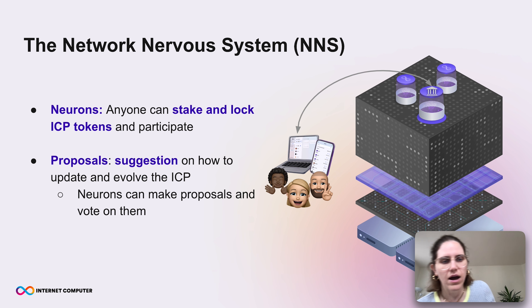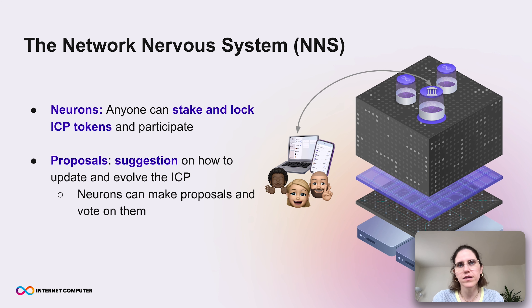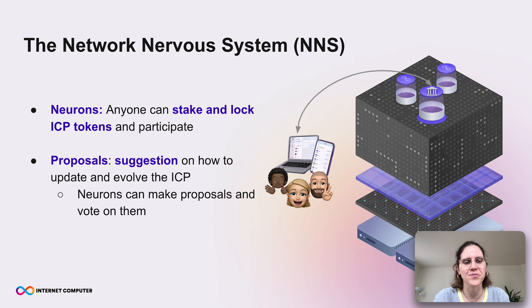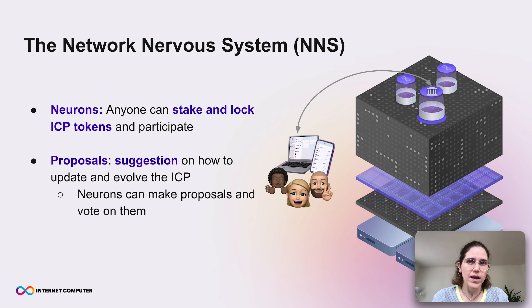Let's look a little bit more into how this governance actually works. There are two main concepts that are very important. First, neurons — a neuron is basically a governance participant. A neuron is actually some staked tokens. Anyone can become a governance participant by staking some ICP tokens and locking them for a certain period of time into a so-called neuron, and then they can participate in governance. The other important concept is proposals — proposals are basically just suggestions on how to update and evolve the protocol. Any neuron can make a proposal and other neurons can then vote on it.